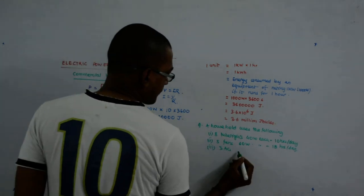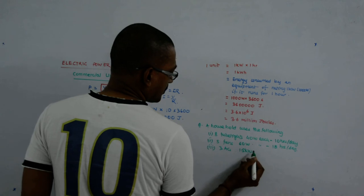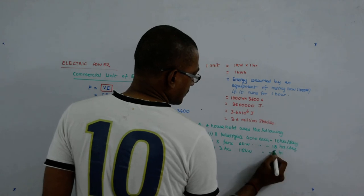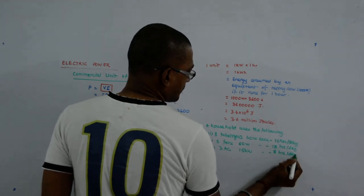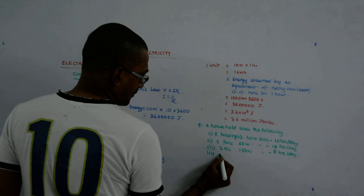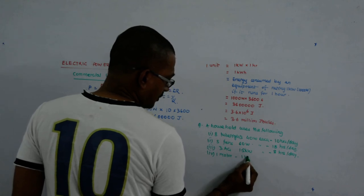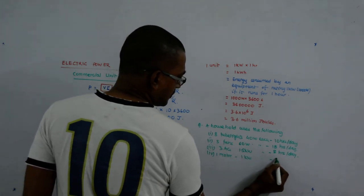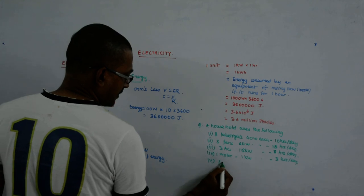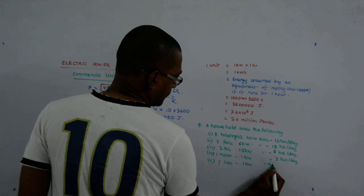3 ACs, 1.5 kilowatt each, 8 hours per day. One motor, 1 kilowatt, 3 hours per day. 1 iron, 1 kilowatt, 4 hours per day.